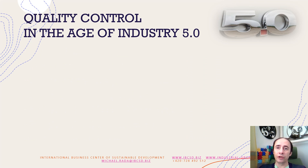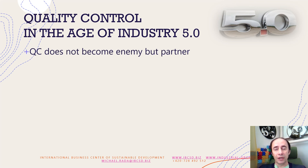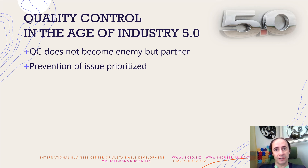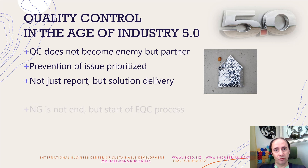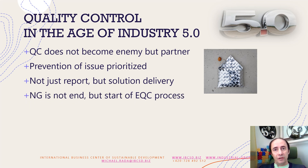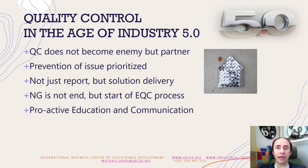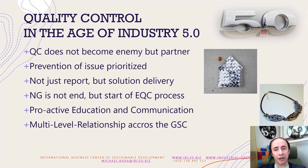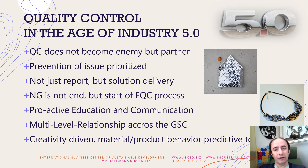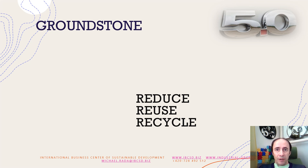How will quality control look in the age of Industry 5.0? QC is not an enemy — it is a partner to all departments. It prevents the issues; this is the prioritized action. It does not just report, but delivers the solution. NG is not the end but the start of the EQC process. Proactive education and communication is a very important part of the work. It is a multi-level relationship across the global supply chain, and it is creativity-driven, because it looks for material and product behavior to predict the further steps.